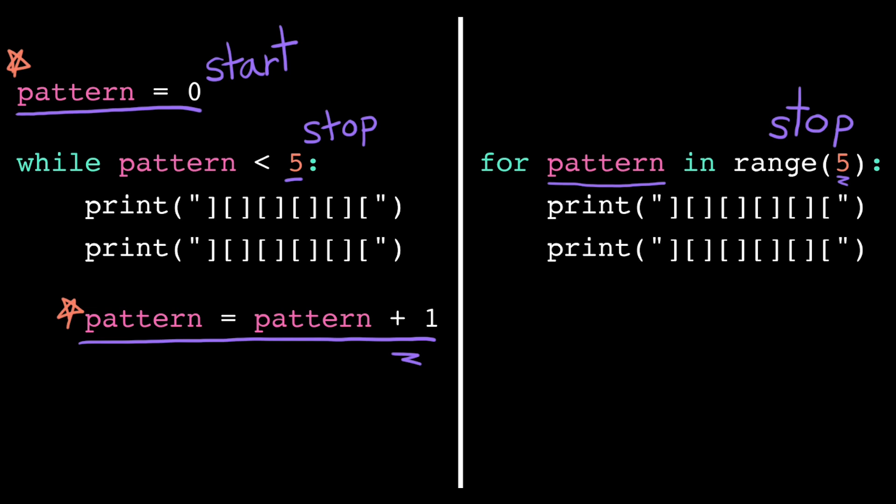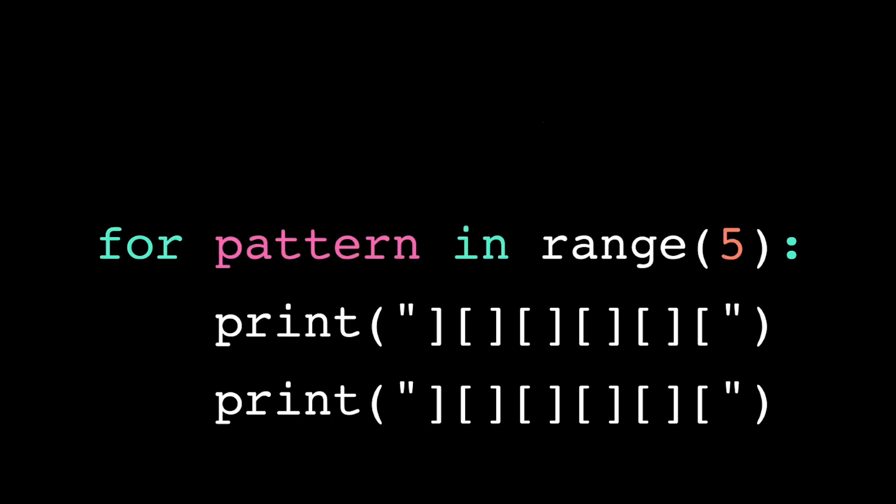That sounds like a lot of magic, so let's trace exactly what the computer does when it executes a for loop. First, the computer simplifies down any expressions in the for statement. Here, it first evaluates this range function call.